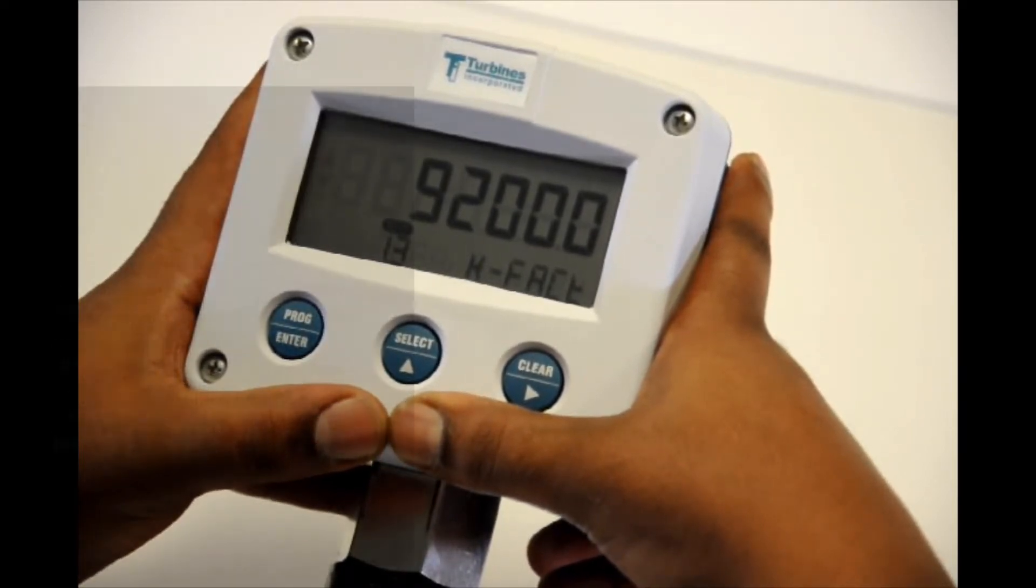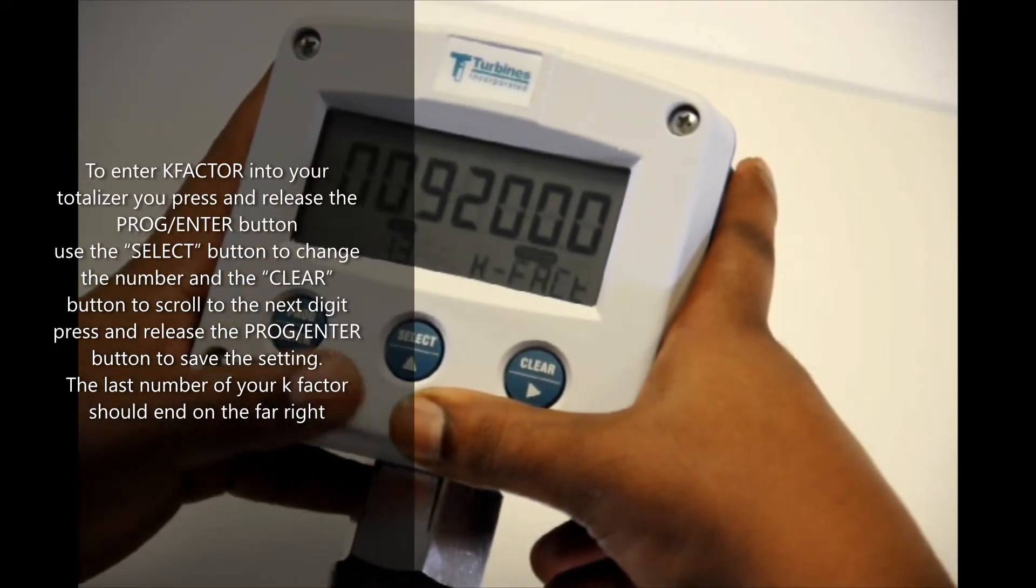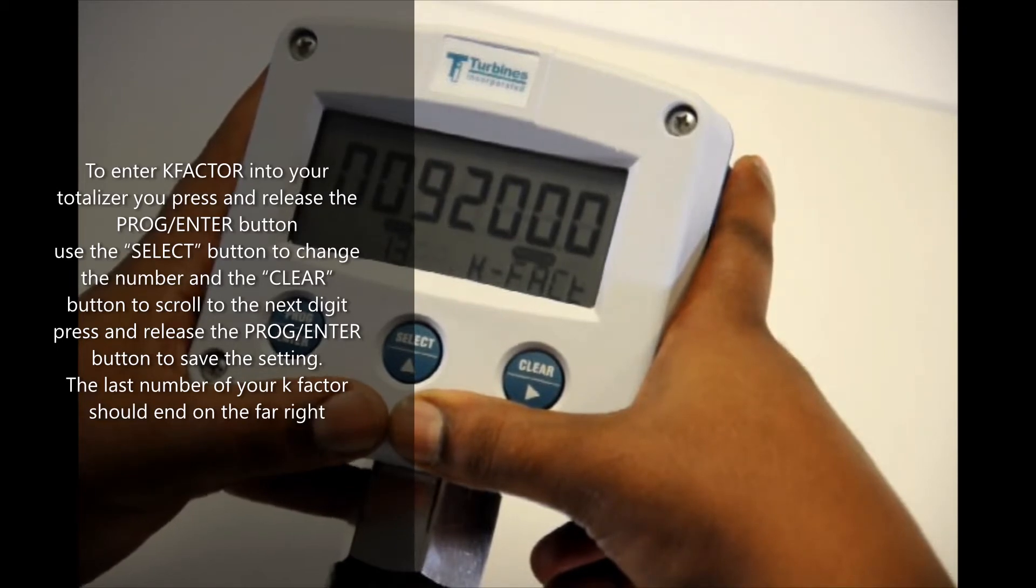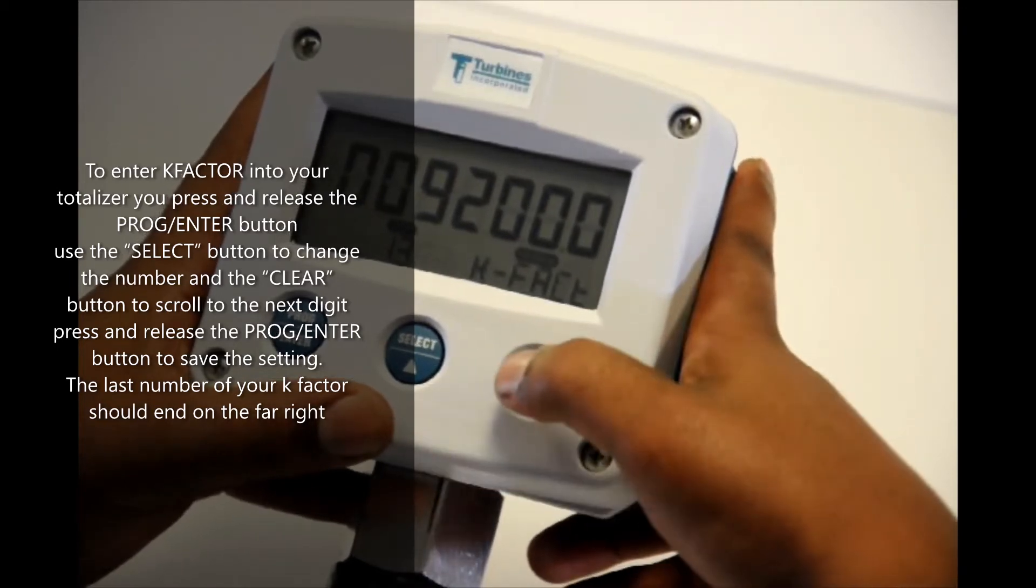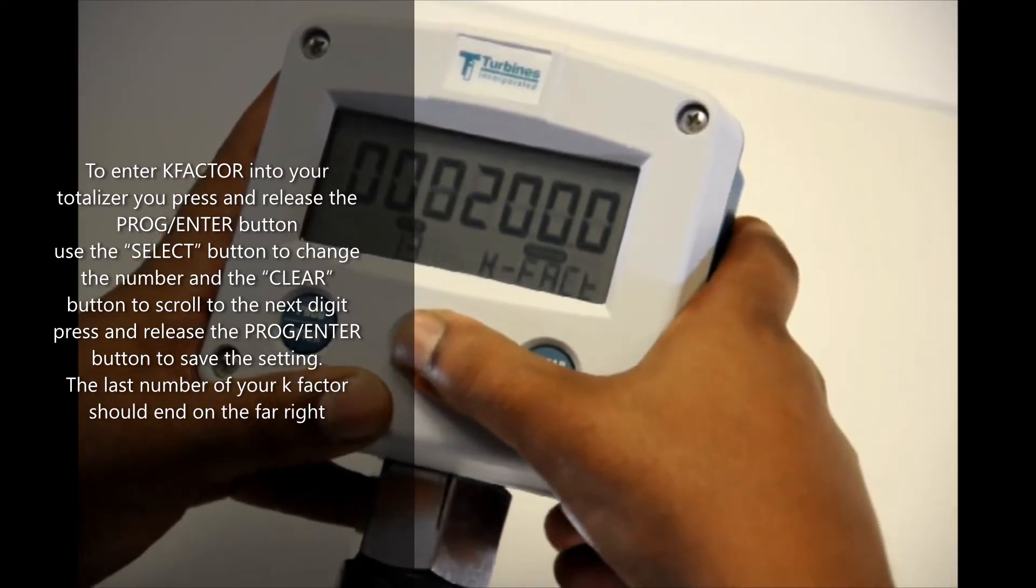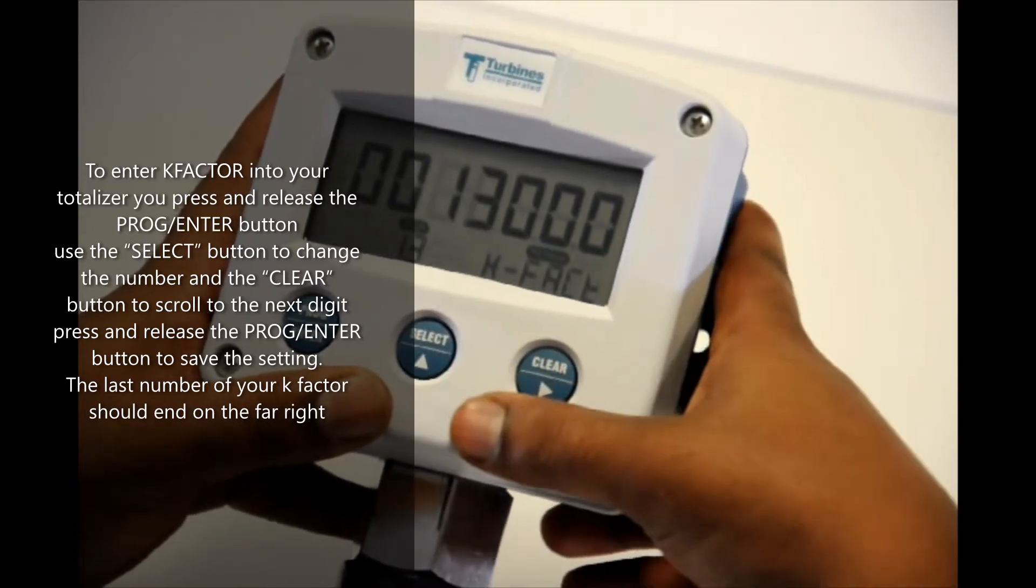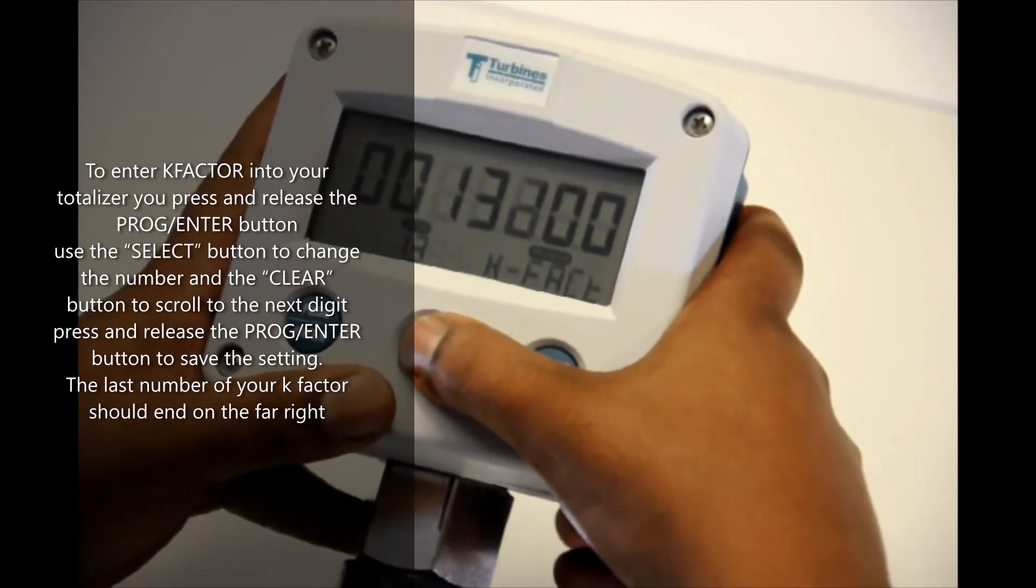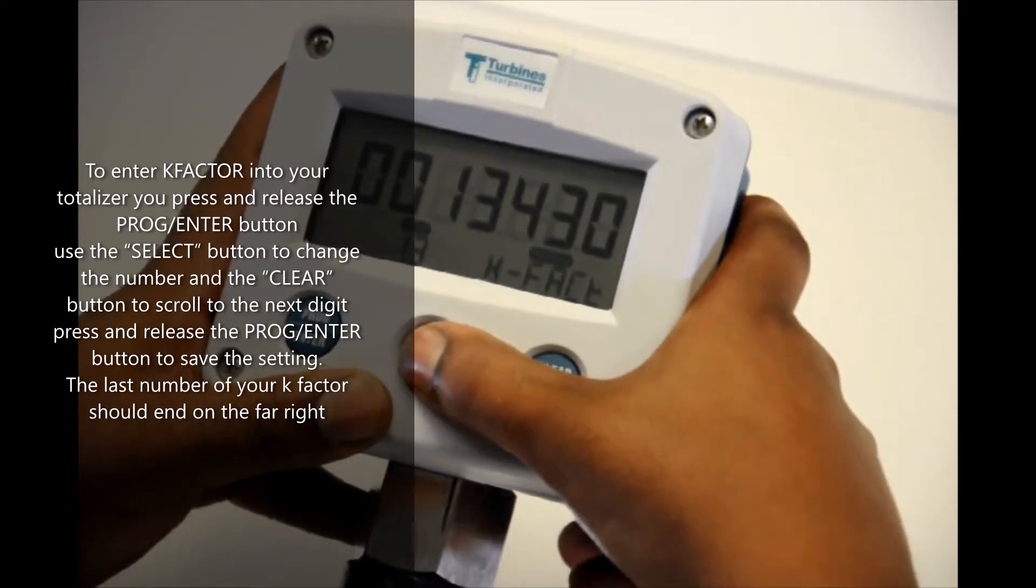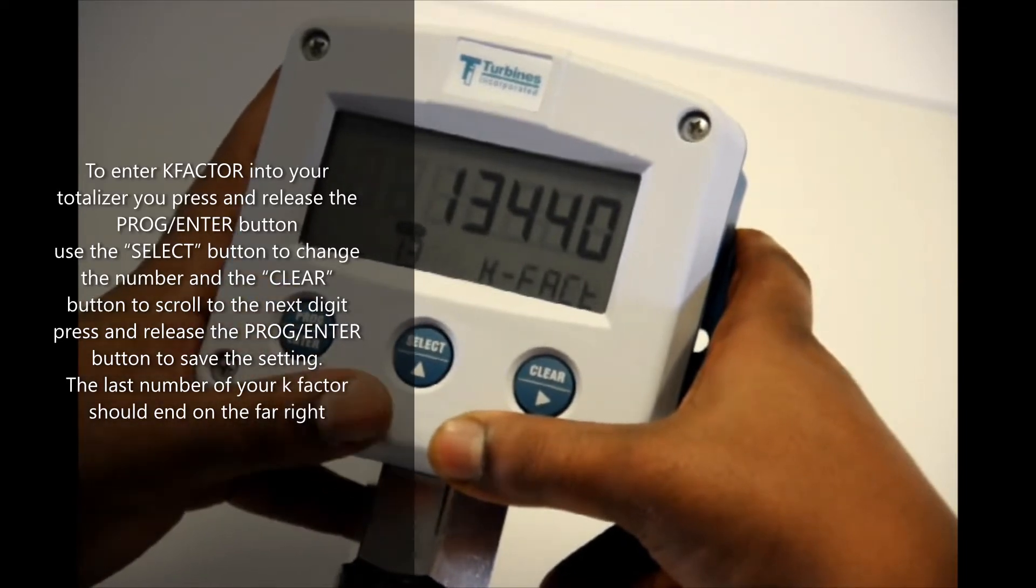For inch and a half our K factor is thirteen four forty. So to enter that number we're going to use program enter. And we're going to have to put this number to the far most right with no zeros behind it. So to do that we're going to hit clear to get to our third number. Use select to change that number. First number will be one. Our next number will be three. Next number will be four. And our last number will be four. So we have thirteen four forty in there as our K factor. Then we hit program enter. This will save our K factor.